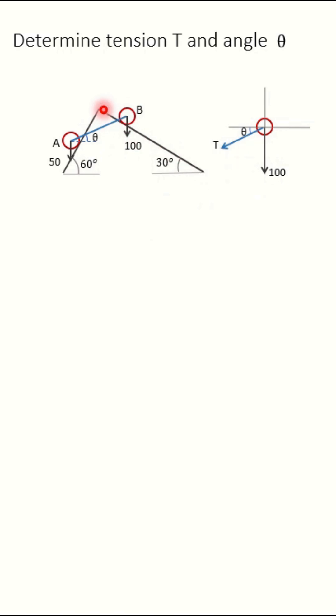And a normal reaction, a reaction which is perpendicular to this surface. Now this surface is making angle 30 degree. Therefore this reaction RB will make same 30 degree with vertical.